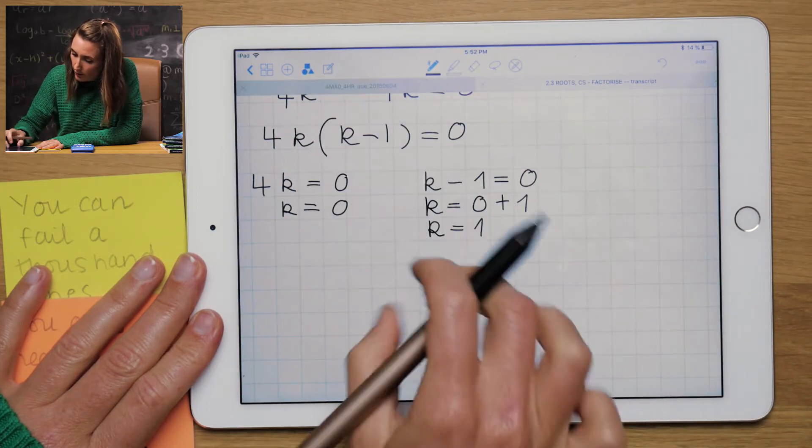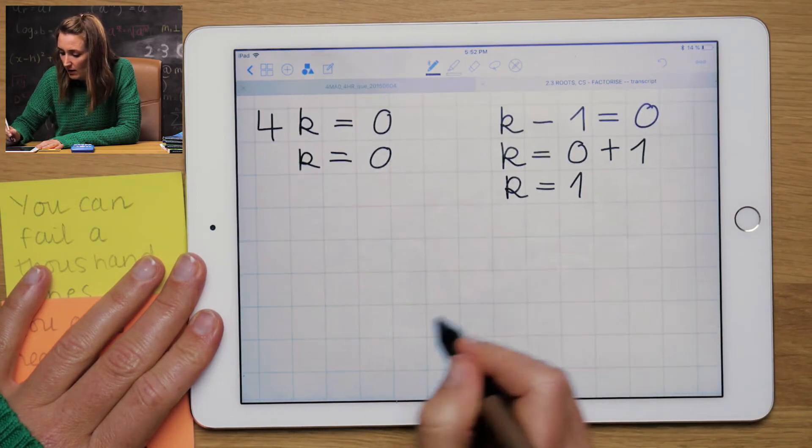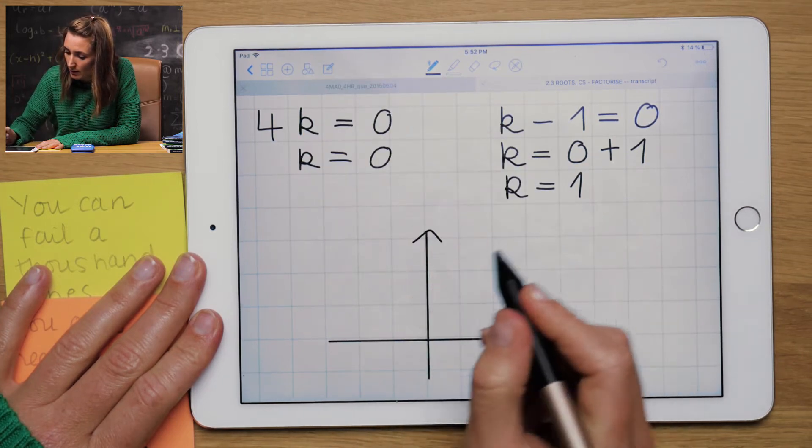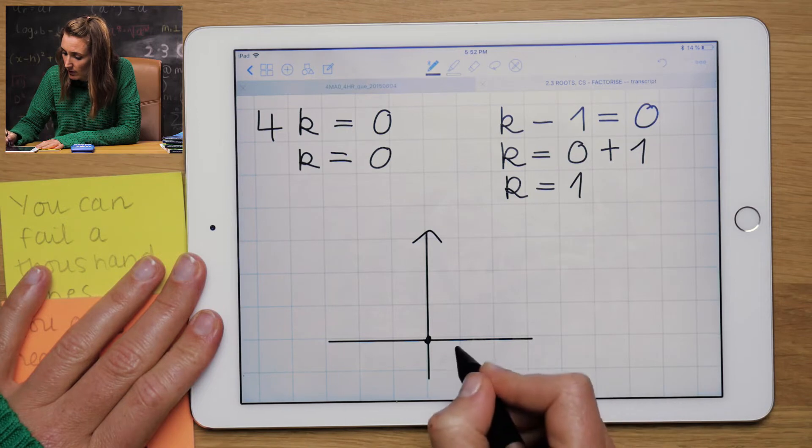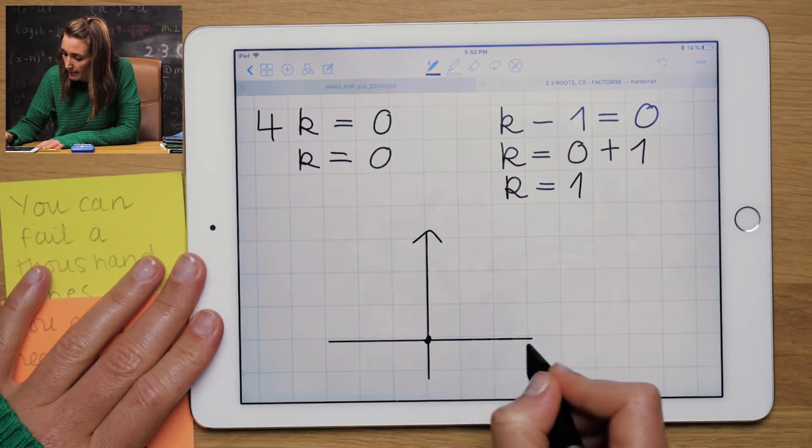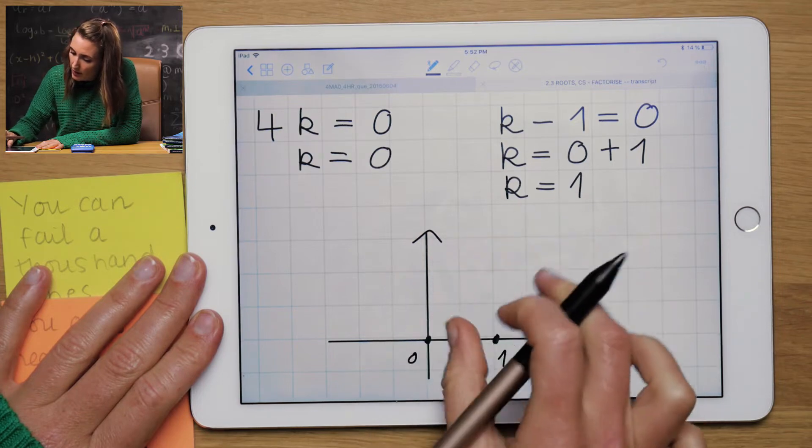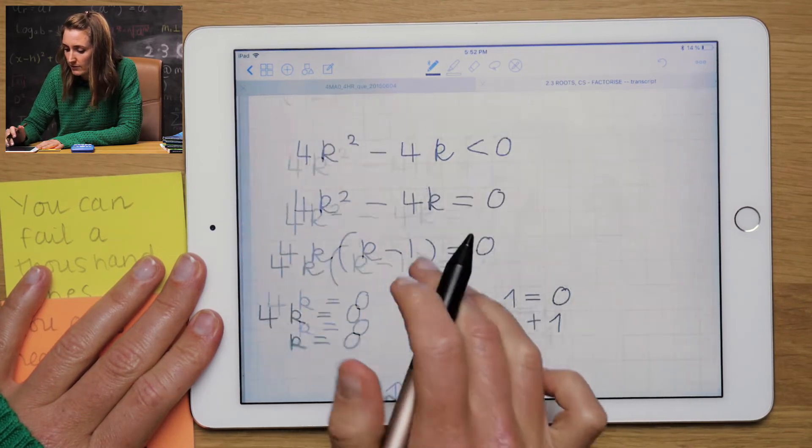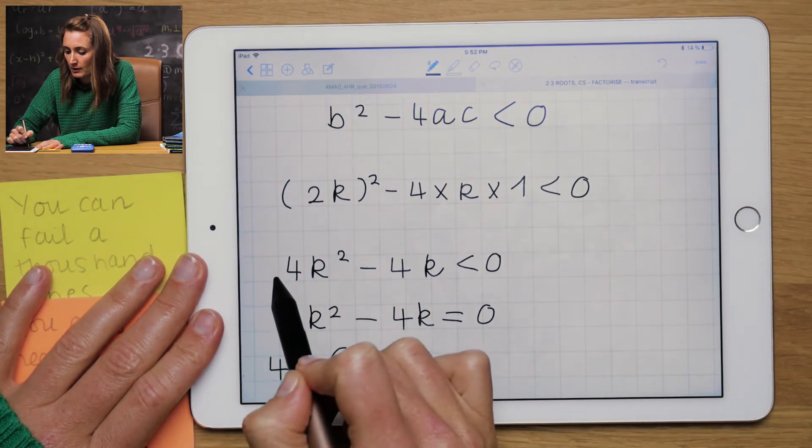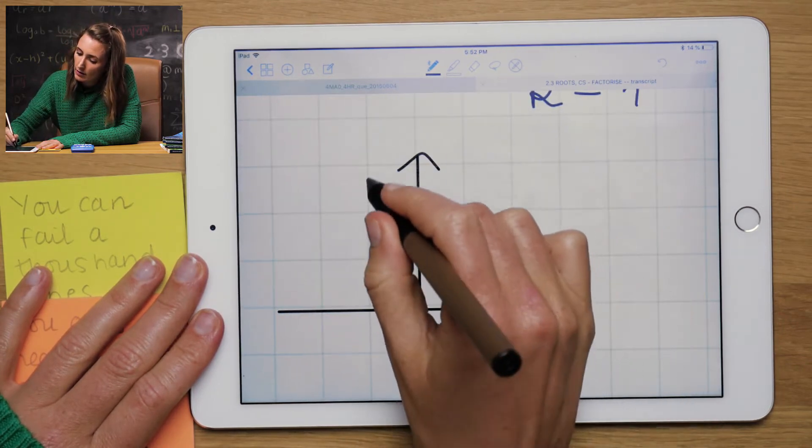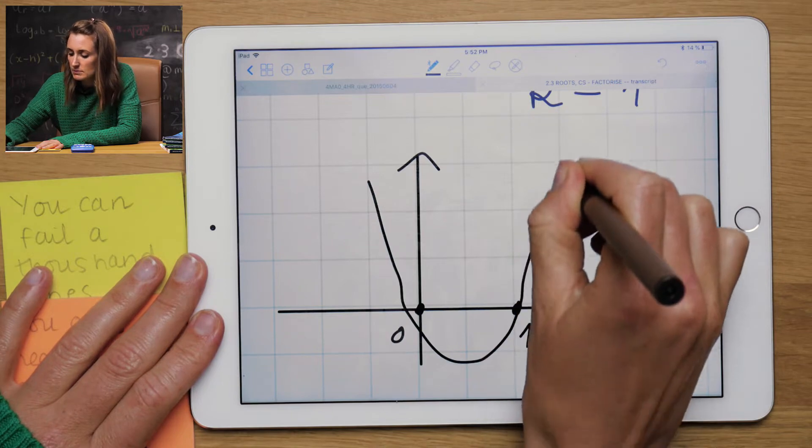Get a quick diagram going. This diagram doesn't need to be perfect. It's really just a rough sketch for you. I'm going to mark in k is 0 and k is 1. Let's put that there. So that's 1 and that's 0. This is a positive, it's not a minus 4k squared, it's a positive quadratic. So it's going to be a smiley face.